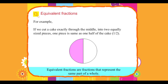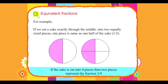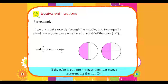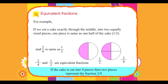One upon two. If the cake is cut into four pieces, then two pieces represent the fraction two upon four, and two upon four is the same as one upon two. Two upon four and one upon two are equivalent fractions.